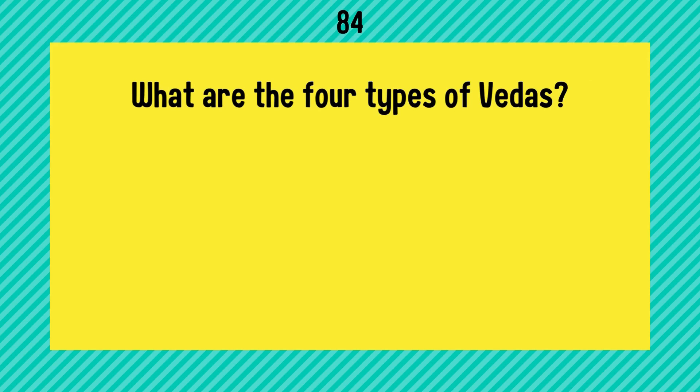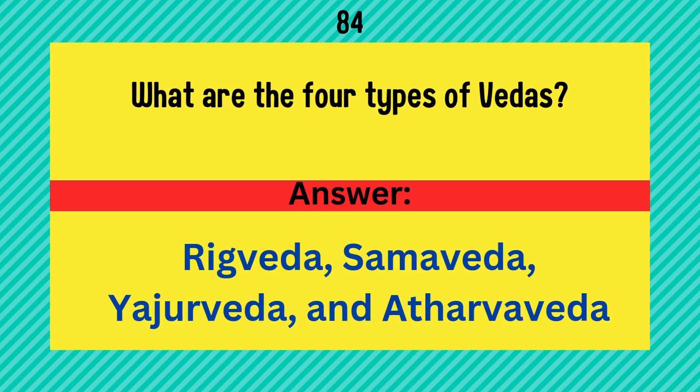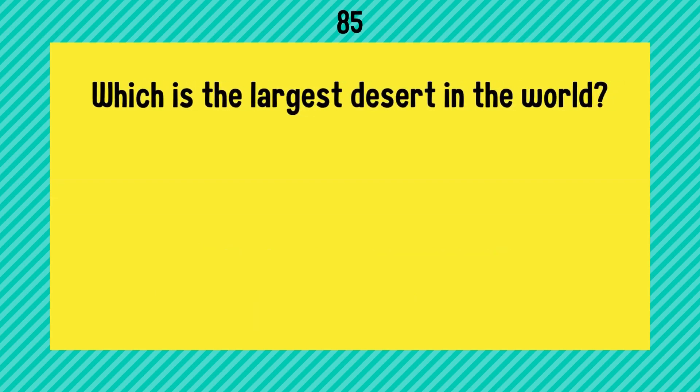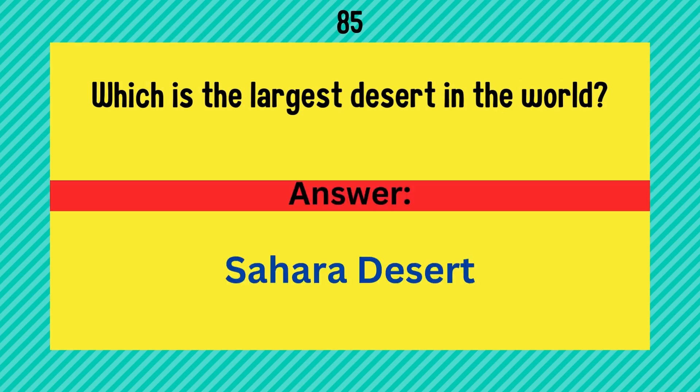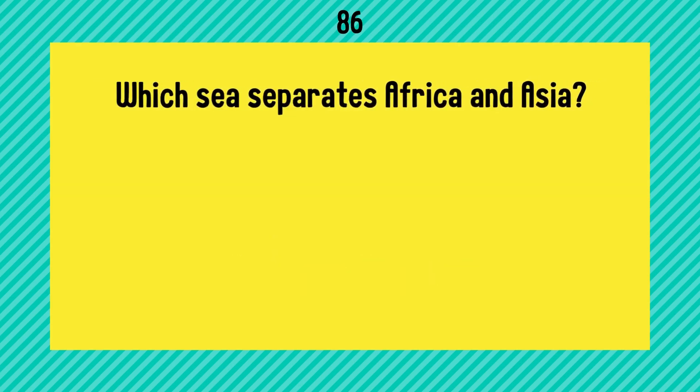What are the four types of Vedas? Rig Veda, Sama Veda, Yajur Veda, and Atharva Veda. Which is the largest desert in the world? It's Sahara Desert.